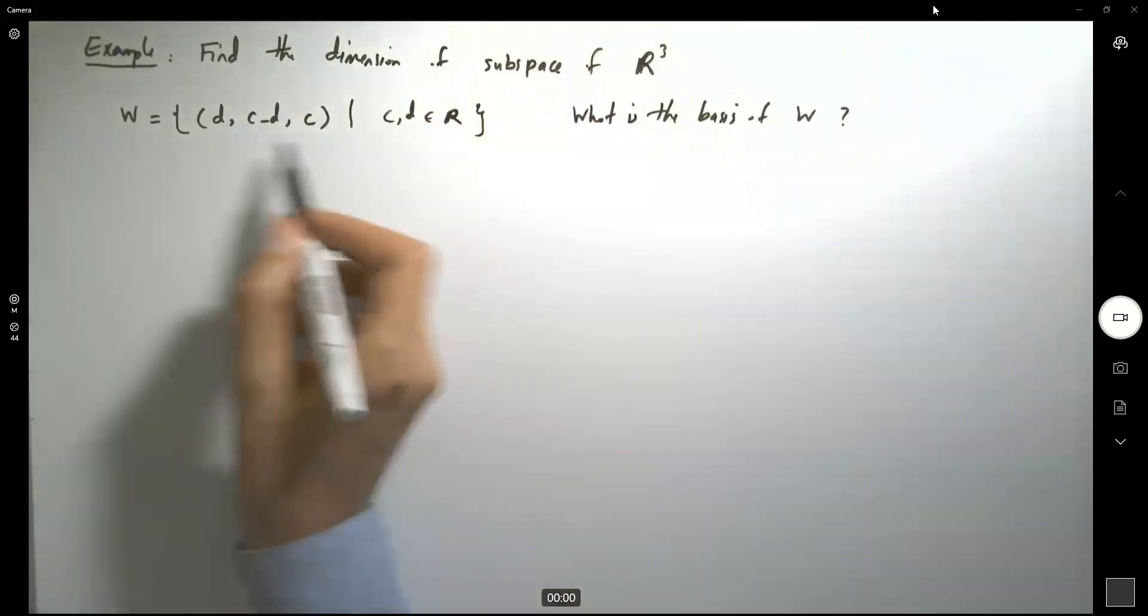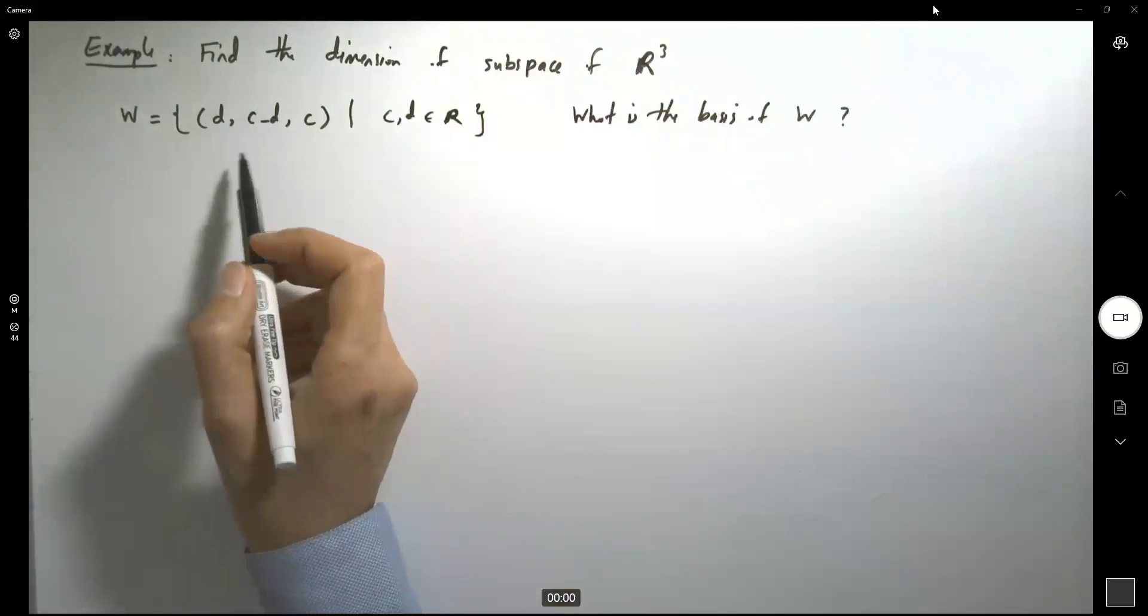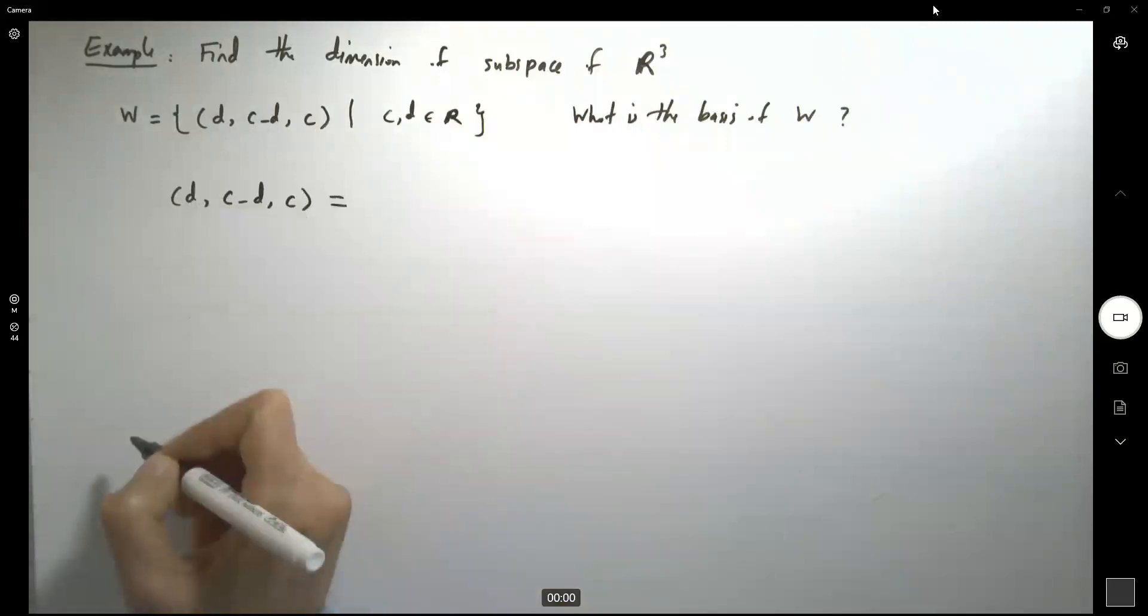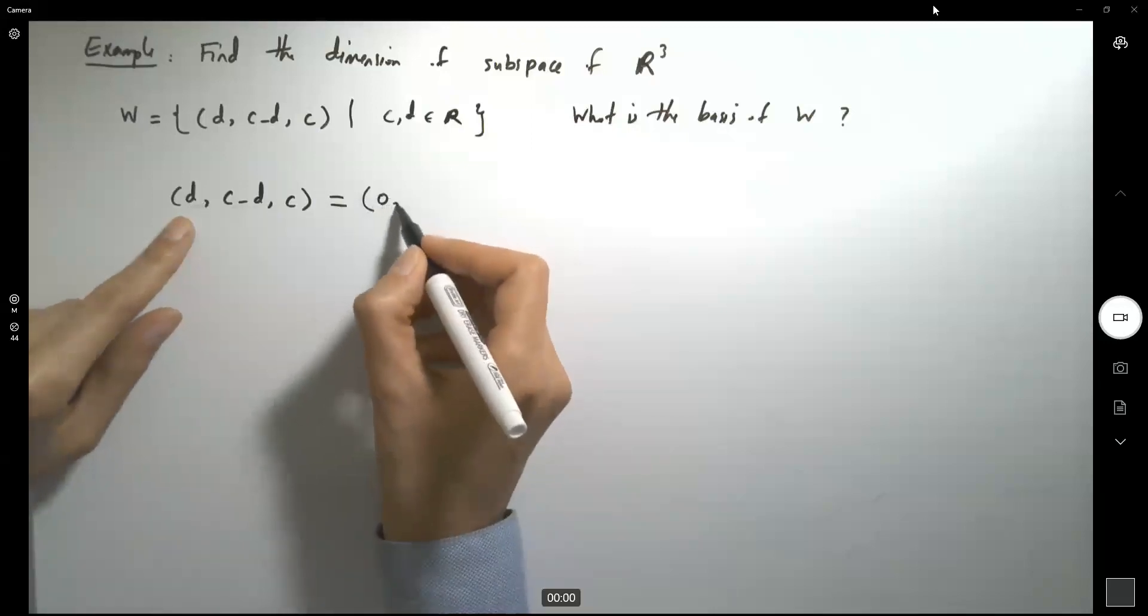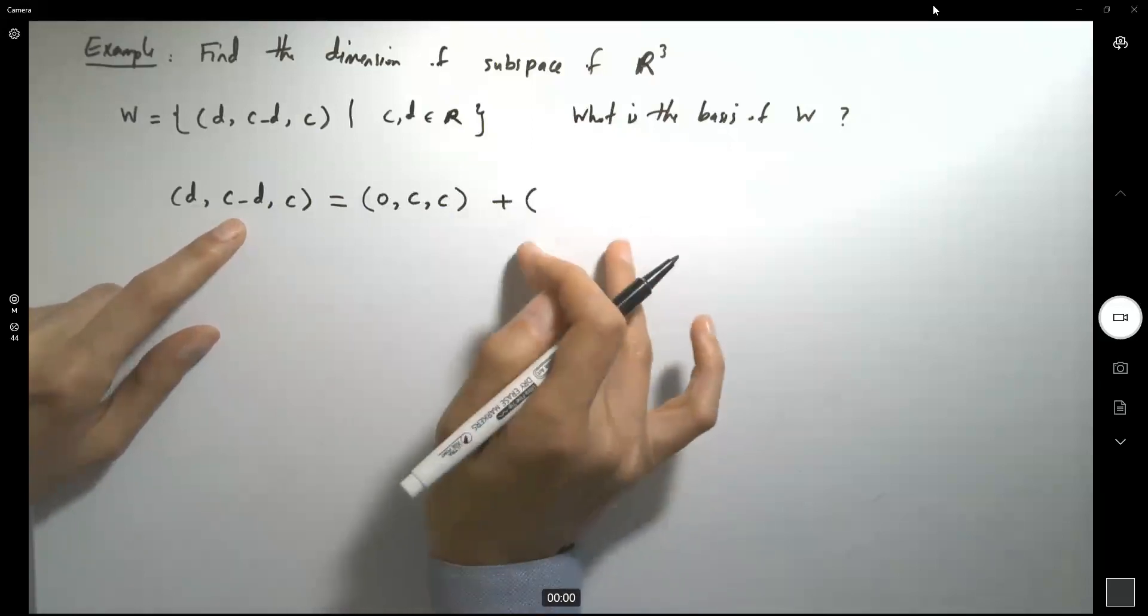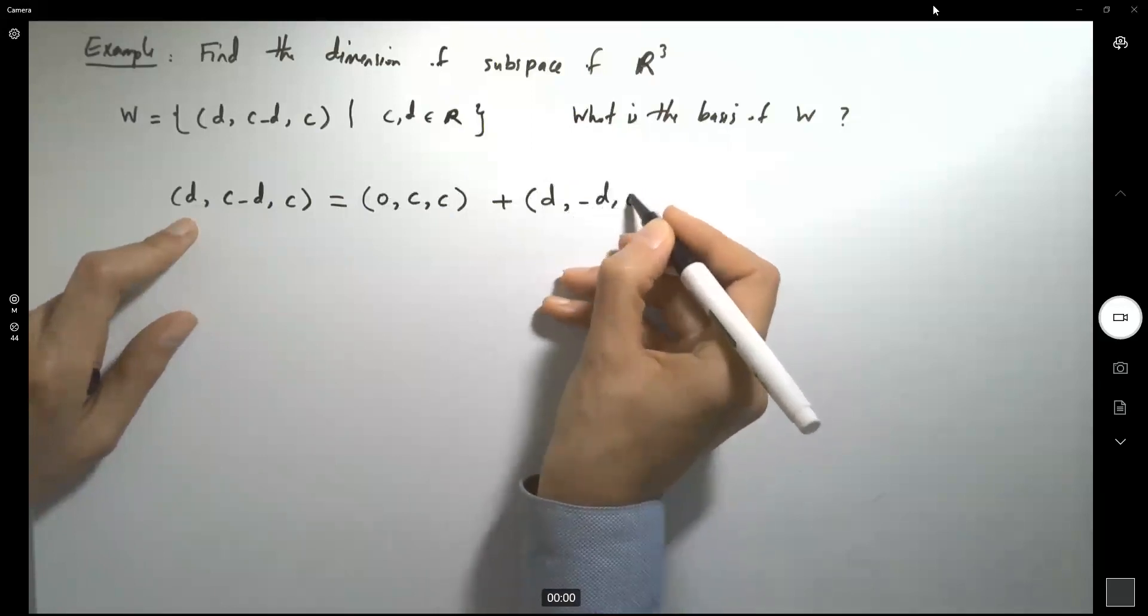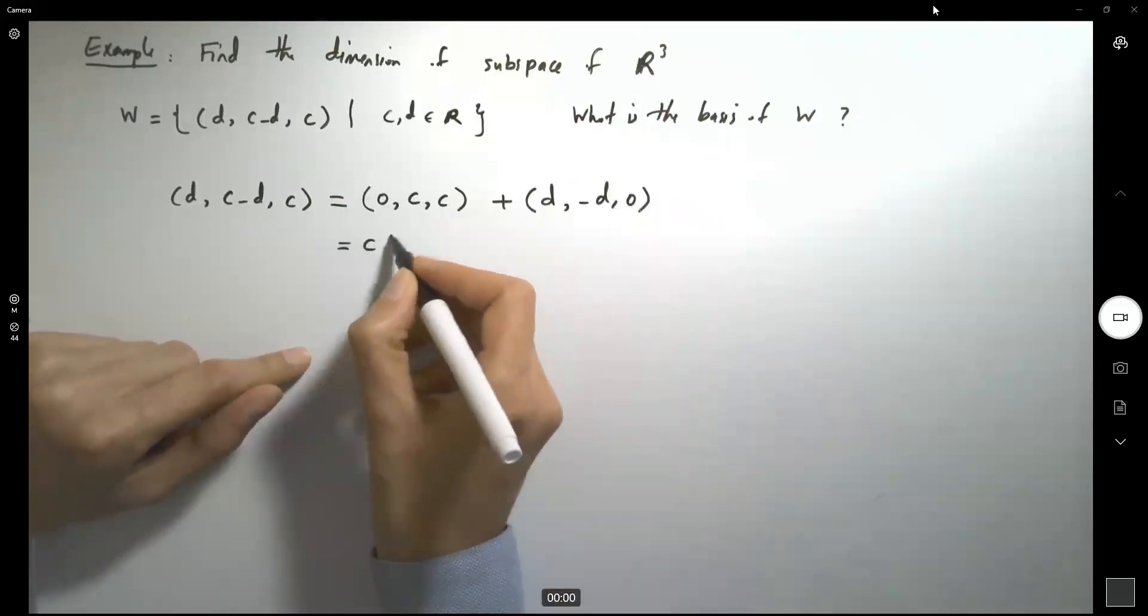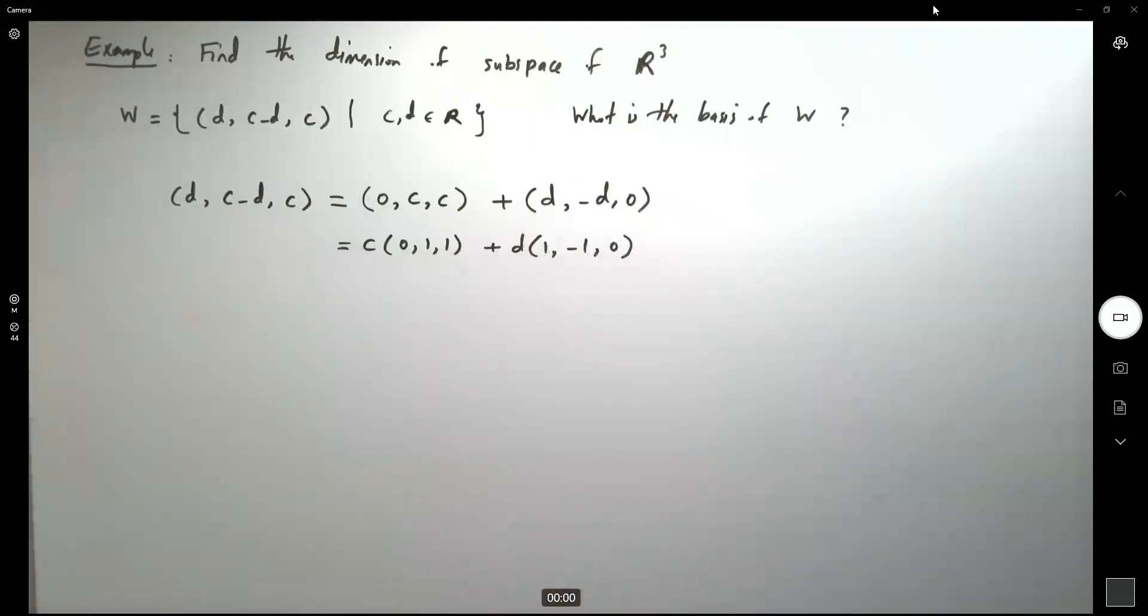So just take a look at this element in this tuple here. D and C minus D and C can be written as 0, C and C plus, this is the addition of two other elements, D, negative D and 0, which can be further broken down into C times 0, 1 and 1, plus D times 1, negative 1 and 0.